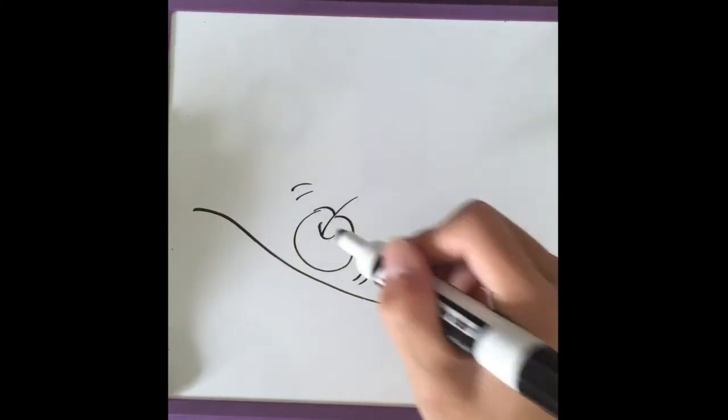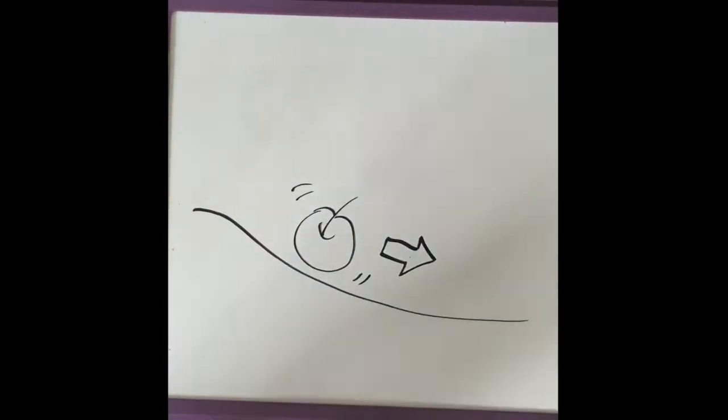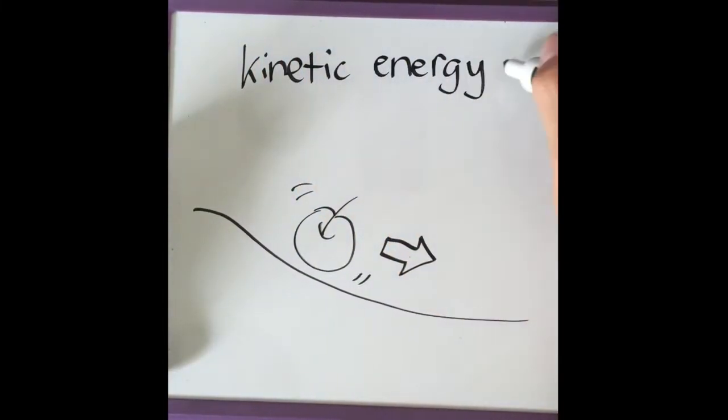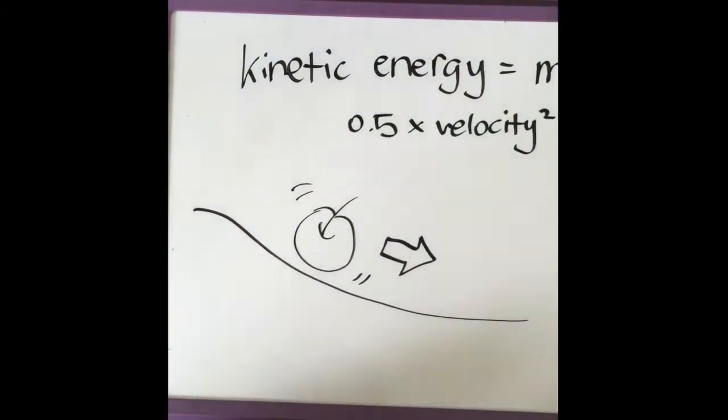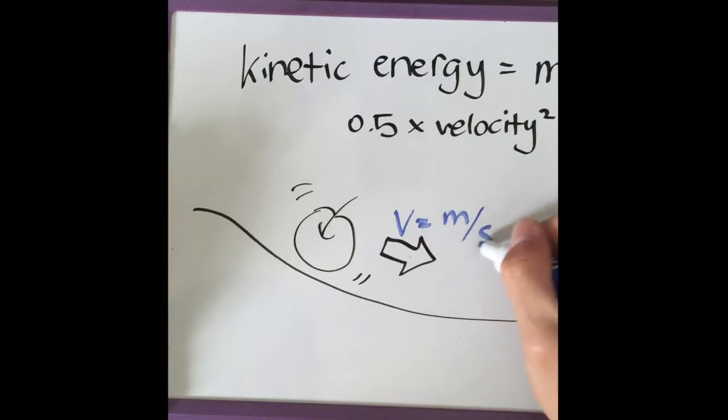Kinetic energy is the energy of motion. For example, an apple rolling on the ground has kinetic energy because it has motion and it is moving. The kinetic energy is determined by the mass and the velocity of the object. The formula is mass times 0.5 times velocity squared.